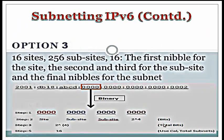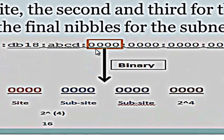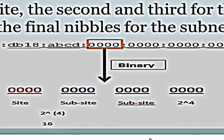Now let's move to option 3: 16 sites, 256 sub-sites, giving a total of 16 subnets. The first nibble is for the site, the second and third nibbles for the sub-site, and the final nibble for the subnet. In this example, one nibble is for the site, two nibbles for the sub-sites, and the last one for the subnet. That gives us 2 to the power of 4, which results in 16 total subnets.